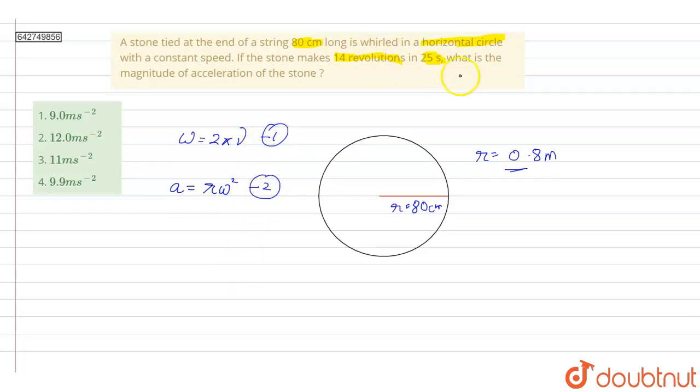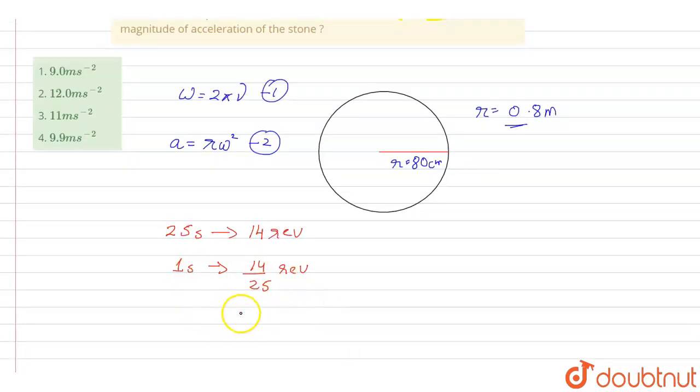Now here, the stone takes 25 seconds to complete 14 revolutions. So in one second, how many revolutions will it take? 14 by 25. So 14 by 25 will be the frequency. The frequency nu equals 14 by 25 seconds inverse.